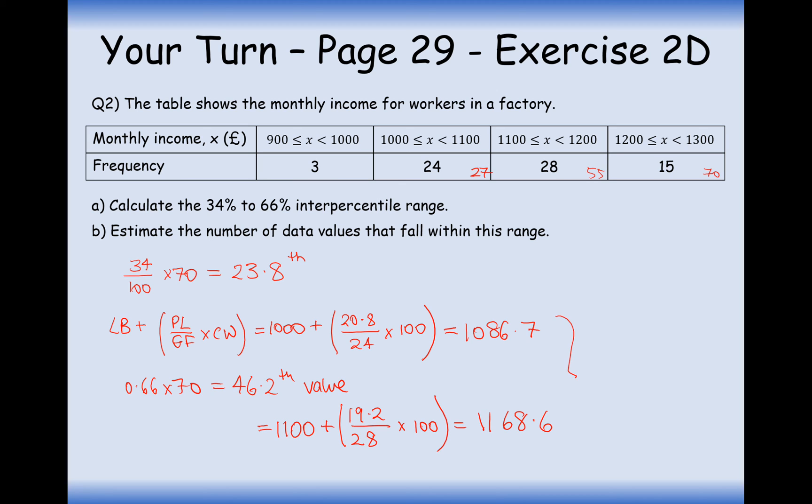So now the interpercentile range will be one subtracted by the other. So 1,168.6 subtract 1,086.7. And here we're going to get 81.9. So that's the interpercentile range there. Estimate the number of data values that will fall in this range. Well, it's probably going to be approximately a third of the data values. And a third of 70 is going to be 70 divided by 3 will give us about 23 data values.